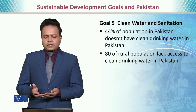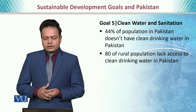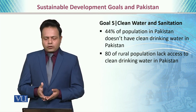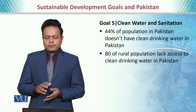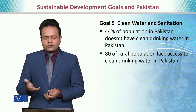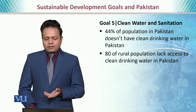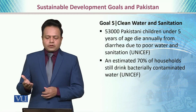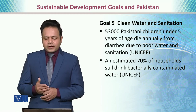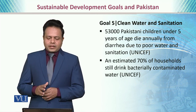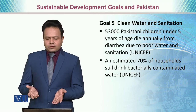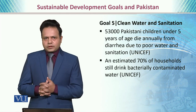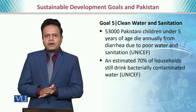Goal five is clean water and sanitation facilities. 44% of the total population of Pakistan does not have access to clean or potable drinking water, and 80% of the rural population lacks access to clean drinking water. 53,000 Pakistani children under five years of age die annually because of diarrhea due to poor water and sanitation. It is estimated that 70% of households in Pakistan still drink bacterially contaminated water. Goal five is far from being achieved.